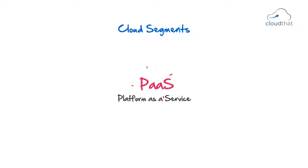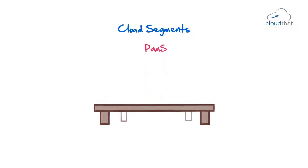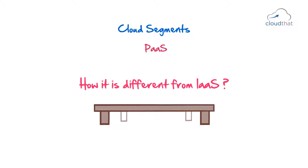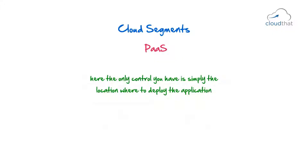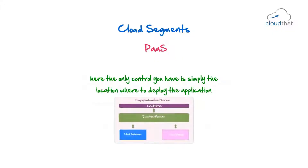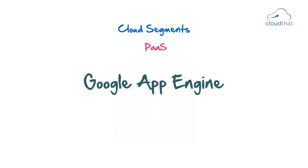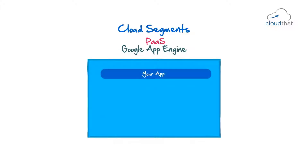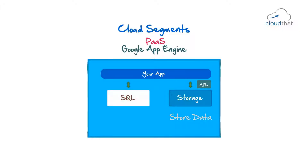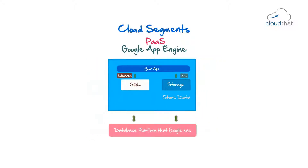Platform as a Service, PaaS. How it is different from Infrastructure as a Service is that here, the only control you have is simply the location where to deploy your applications — you don't get to choose the building blocks. An example is Google App Engine. When you deploy an application to Google App Engine, if you want storage, you call APIs and internally it uses storage to store data. If you want SQL, you use libraries to write queries which get stored internally in the database platform that Google has.